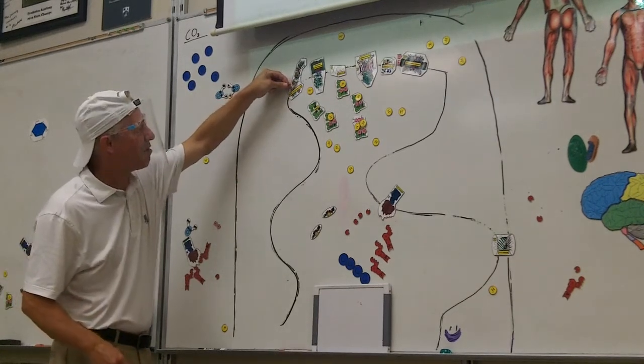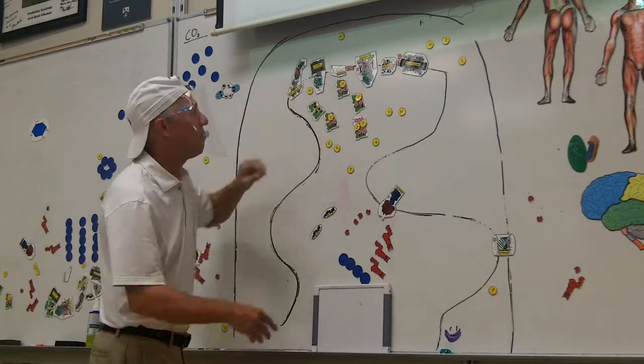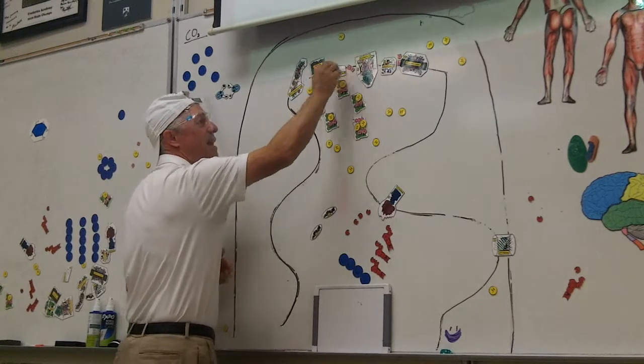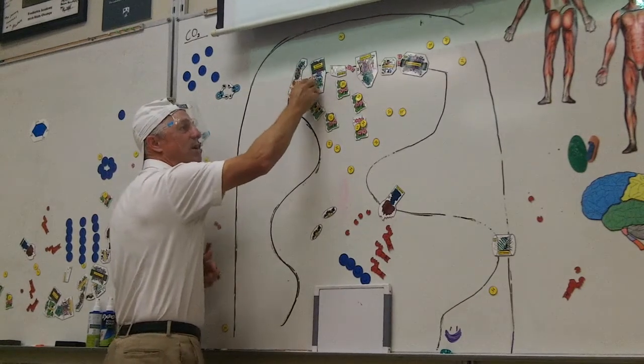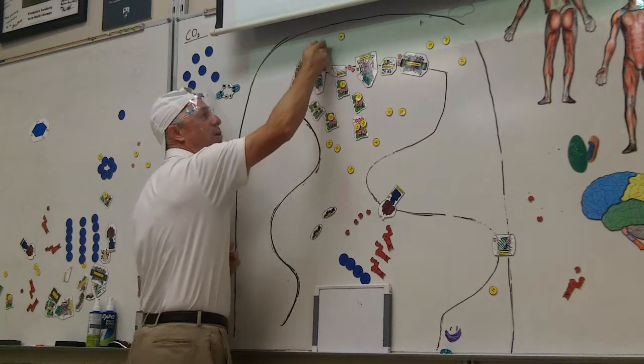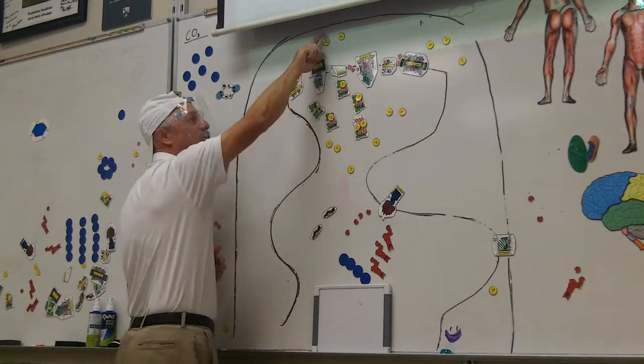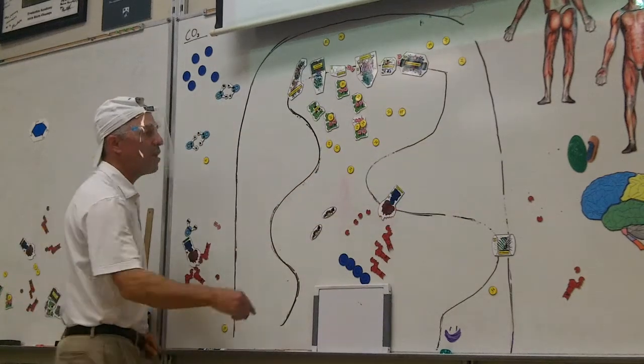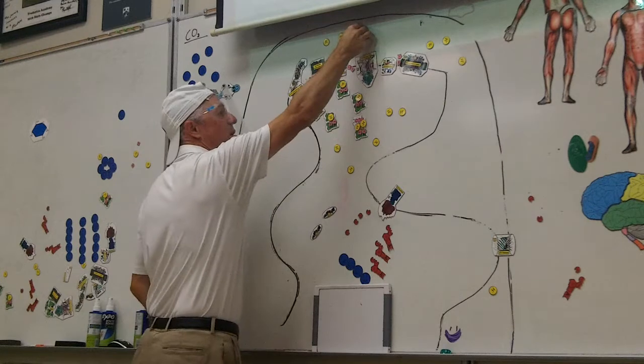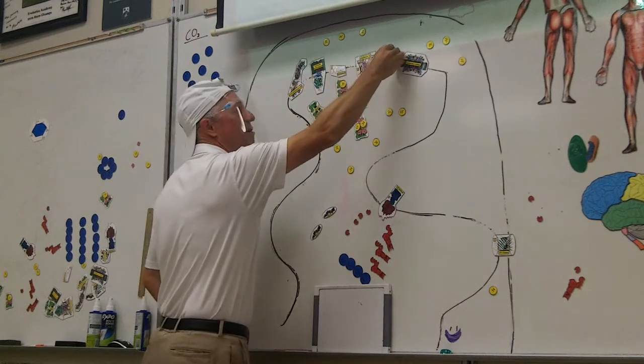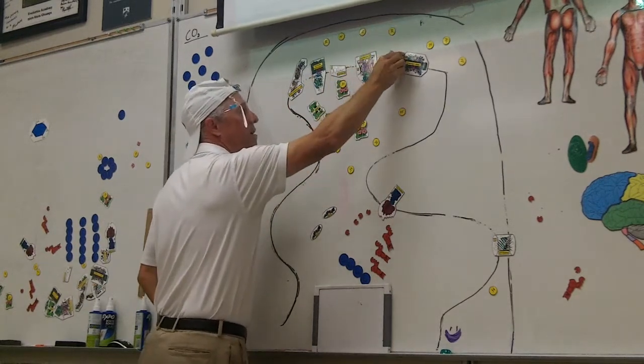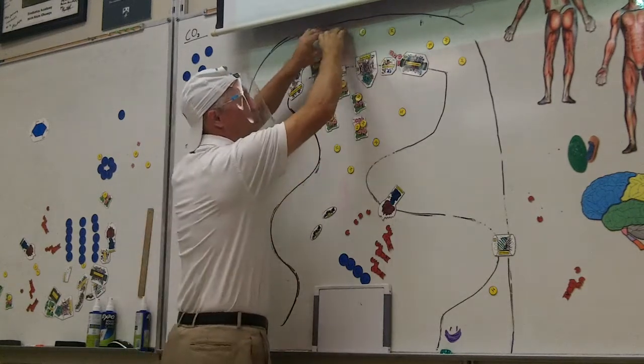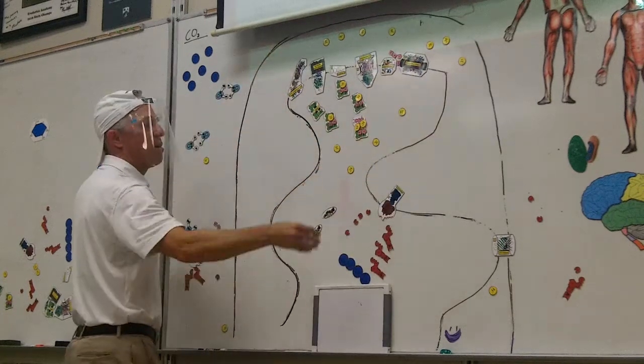So the electrons just do that. They just start moving down the chain. Now, they have energy associated with them. So as they move down the chain, these proteins will use their energy to pull hydrogen ions through the membrane and to the intermembrane space. And actually, that'll happen three times. At three different spots in the electron transport chain, hydrogen is pulled into the intermembrane space from the matrix.